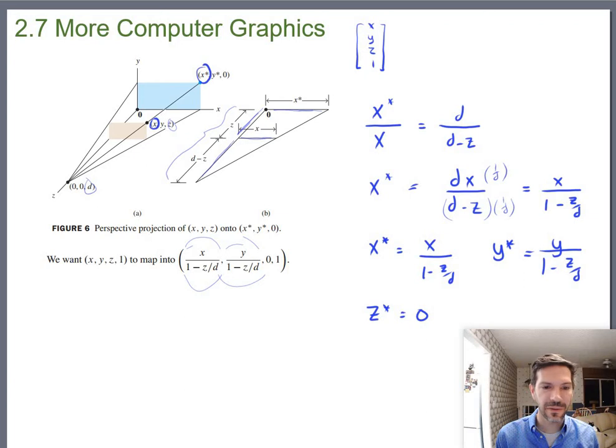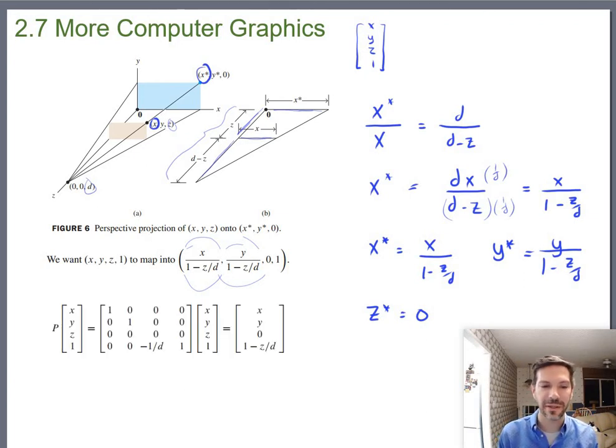So how do you actually do that? Take a look at this particular multiplication. We are multiplying our original point x, y, z, 1 times this guy here. Notice we essentially have an identity matrix right here, except for the z-coordinate has been zeroed out. So this will preserve x-coordinates, preserve y-coordinates, zero out z-coordinates. And then notice as you multiply x, y, z, 1 by this very bottom row, you'll get 0x, 0y, z times negative 1 over d, so negative z over d plus 1, or written the other way around, 1 minus z over d.